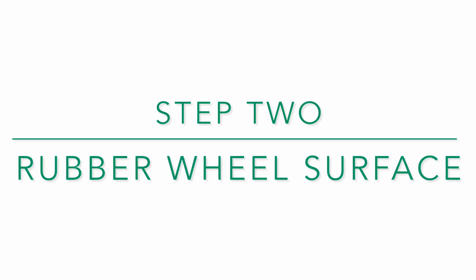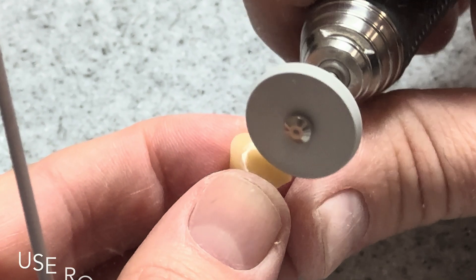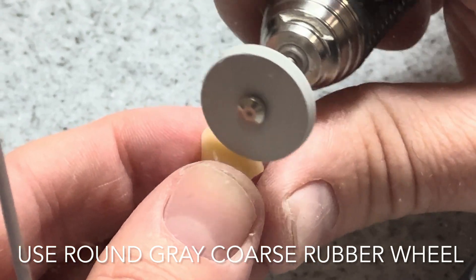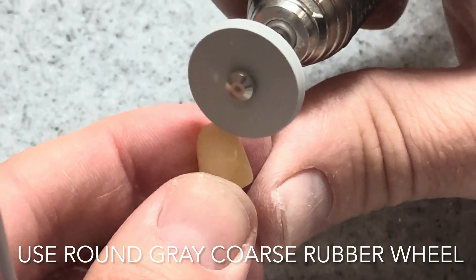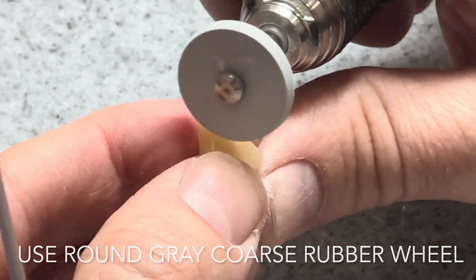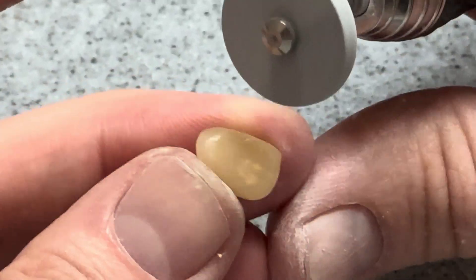For step two we're going to use a rubber wheel. This step is intended to remove any burr marks and smooth the surface. It's important to not apply too much pressure so you don't remove too much surface texture or material.